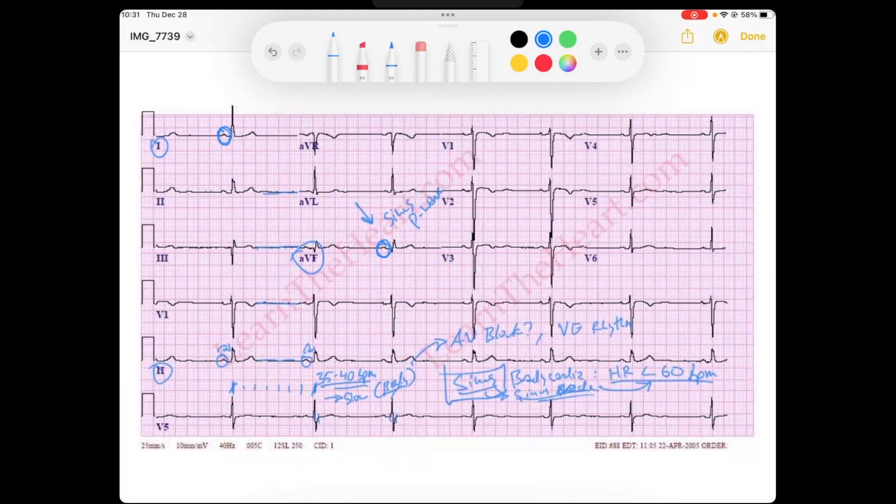So, this is a great example of a sinus bradycardia. All right, we've excluded other causes of bradycardia, and we've verified that this P wave that is driving our rhythm is from the sinus node.